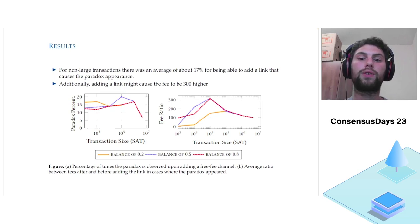Additionally, in the right figure, we calculate the average fee ratio when the paradox appears, meaning we see what was the effect of the fee increase when the paradox appeared. We find out that in some cases, for some transaction sizes, the average of the new fee was 300 times higher than the previous fee. So by adding a channel, we caused a fee increase of 300 times higher.